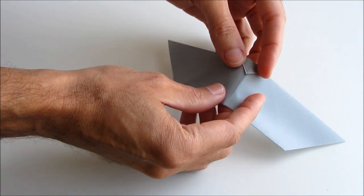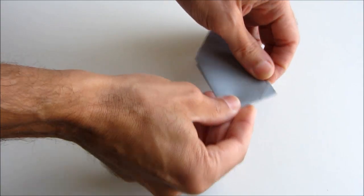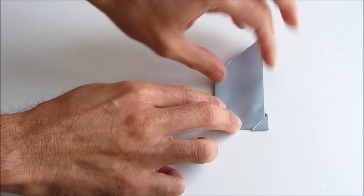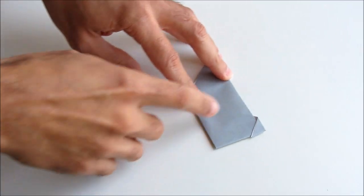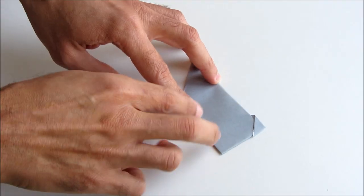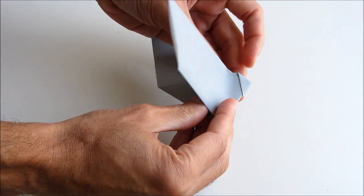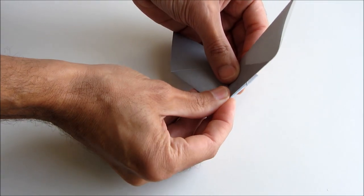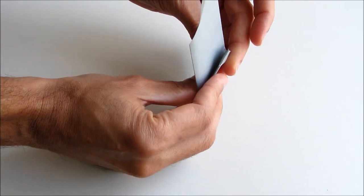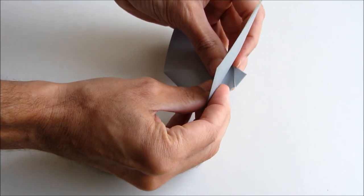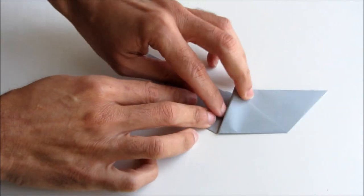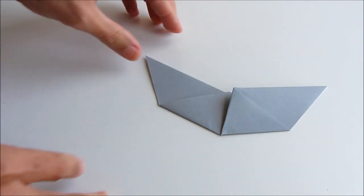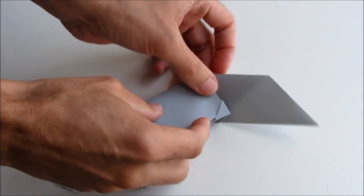Next we're going to make a mountain fold in the piece. Next we're going to make a valley fold along the line I'm showing here. So from the base of the head of the bat to the bottom of the body, flip the piece over and do that on the other side.